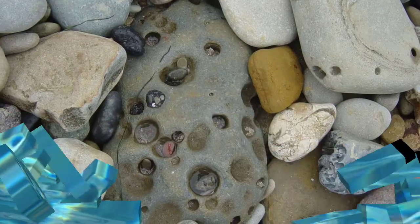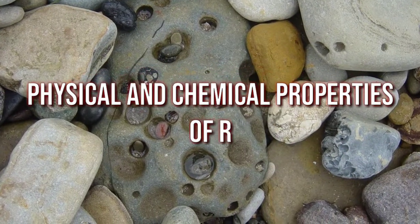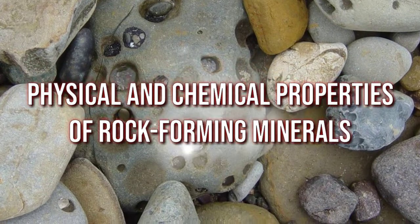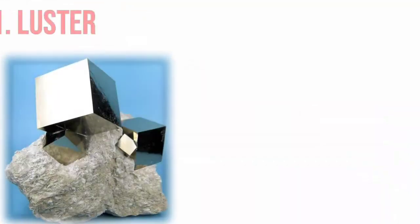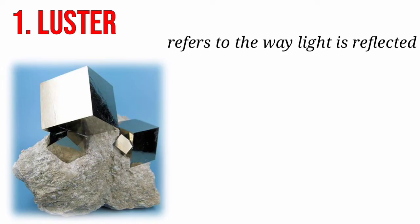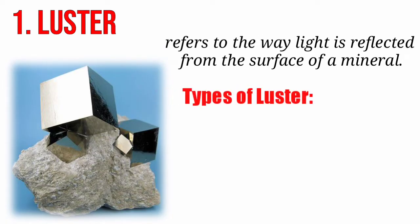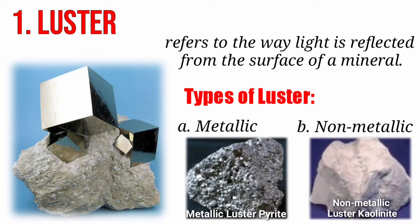Now let's discuss the physical and chemical properties of rock-forming minerals. Let's start with luster. This refers to the way light is reflected from the surface of a mineral. Types of luster: we have the metallic and the non-metallic. Examples are metallic luster — pyrite — and non-metallic luster — kaolinite.